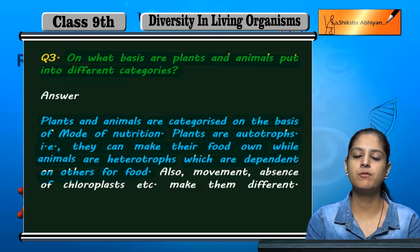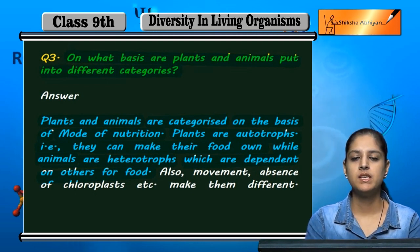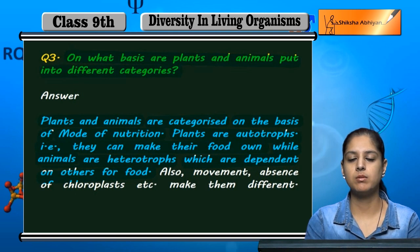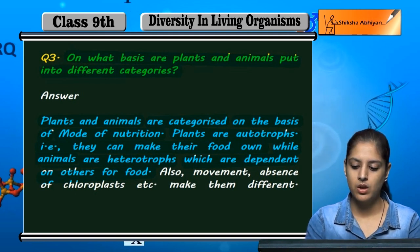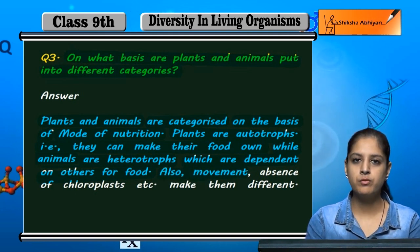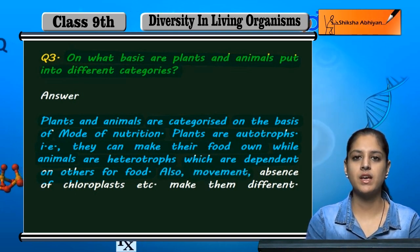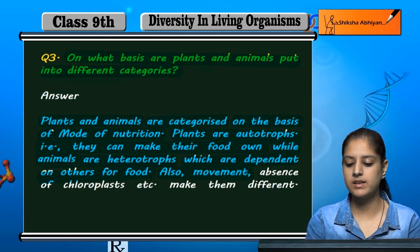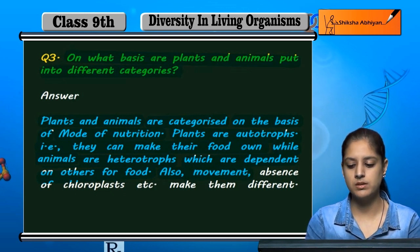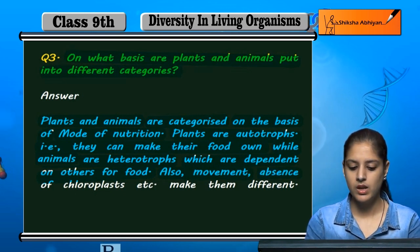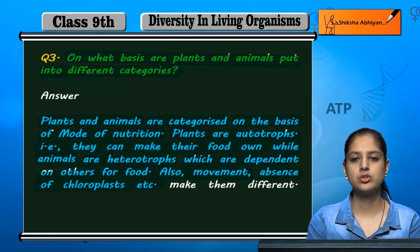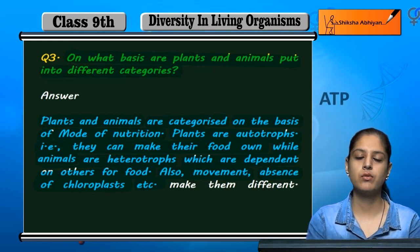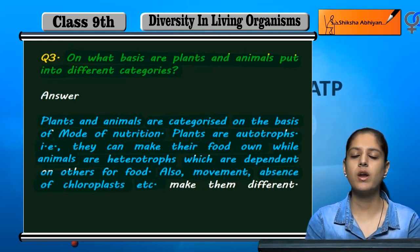This is the primary basis for classifying plants and animals. The second criteria is movement, and the third is the absence of chloroplasts in animals.